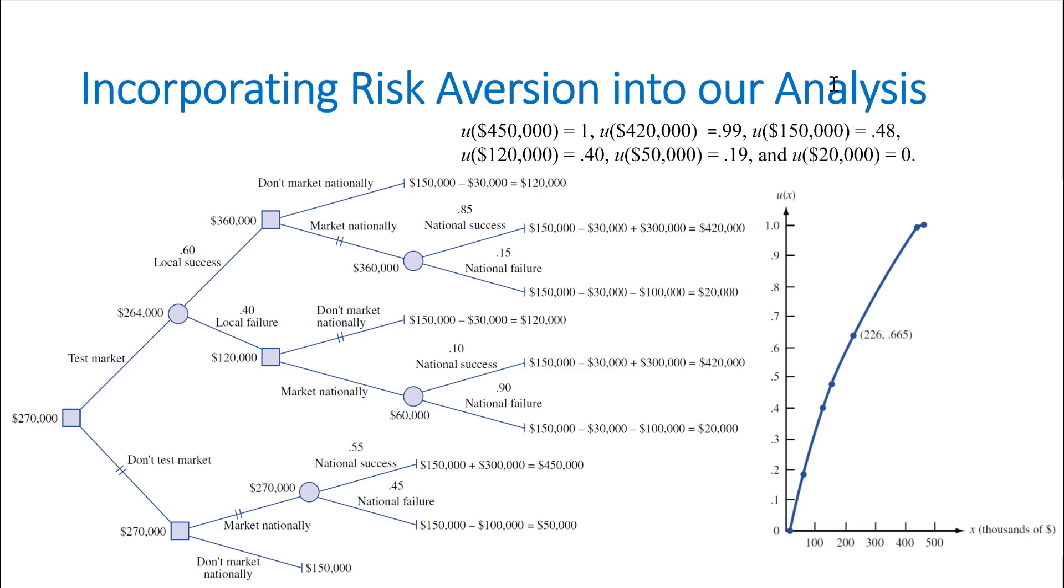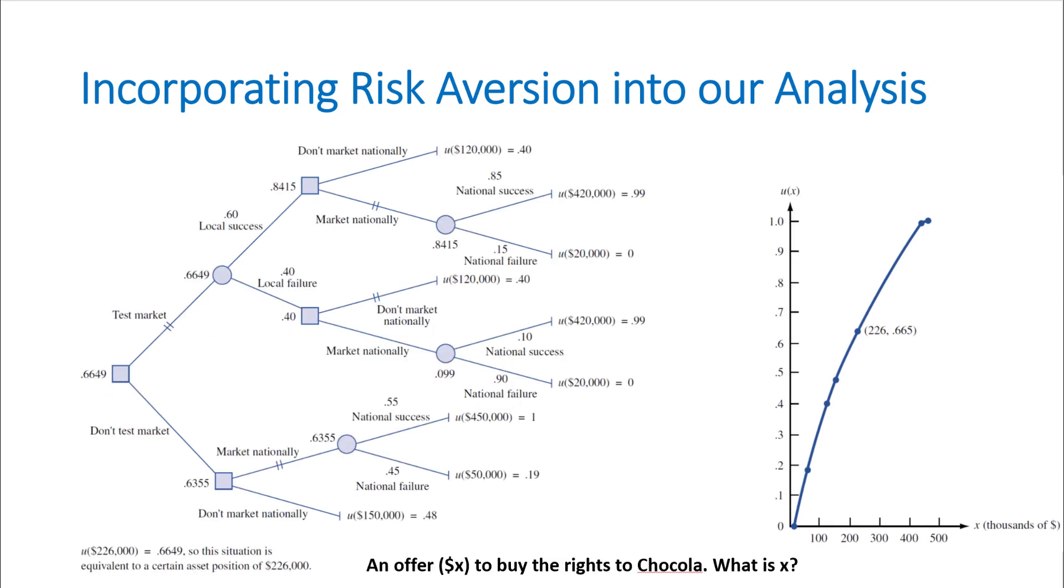Here all we have to do now is replace these values with their utilities and then use the backward method again to calculate the expected utility for this decision tree. In the next slide, we see that I replaced all these final values with their utilities. Utility of $150,000, for example, is 0.48. I use the backward method: for example, 0.55 times 1 plus 0.45 times 0.19, and I got this value.